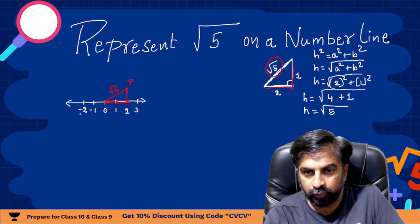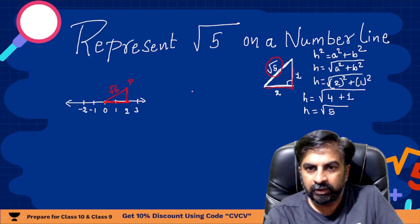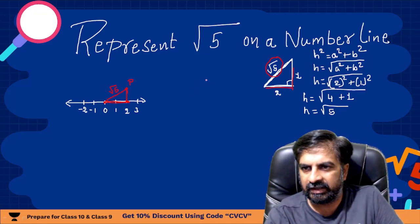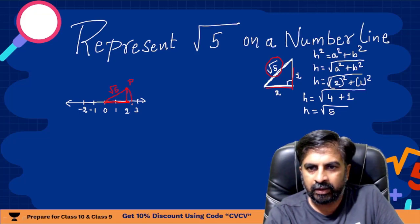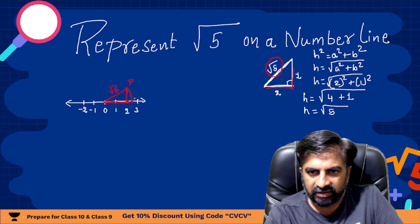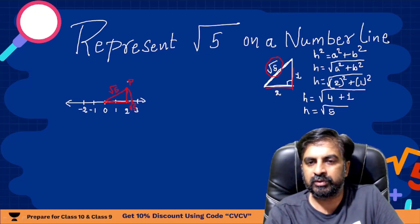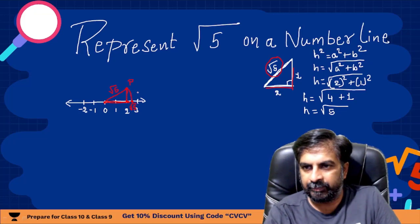Now you need to represent this on the number line. So what you need to do, you need to use a compass, and many states it is called rounder or compass. Keep your needle of that compass here, pencil here, needle here, pencil here, and rotate like this. Wherever that will cut here, that point, this point will be root 5.